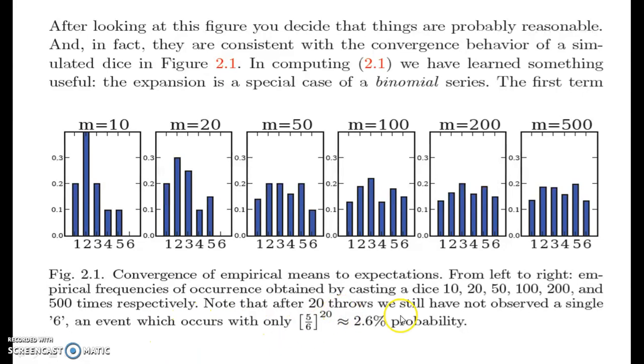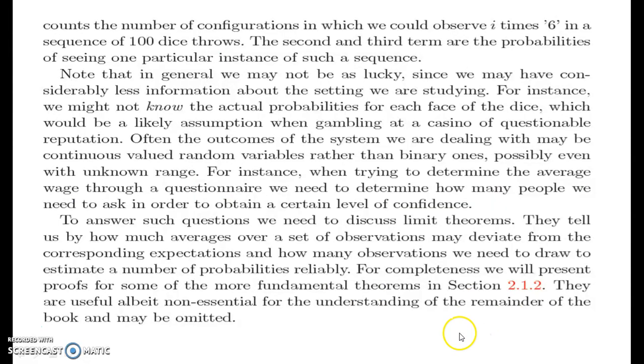Note that after 20 throws, we still have not observed a single 6 in this particular scenario, if you see here. An event which occurs with only 5 by 6 to the power 20, which is approximately equal to 2.6% of probability. This counts the number of configurations in which we could observe i times 6 in a sequence of 100 dice throws. The second and third terms are probabilities of seeing one particular instance of such a sequence.